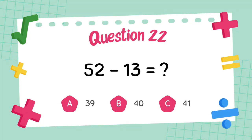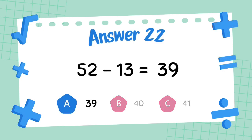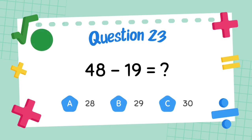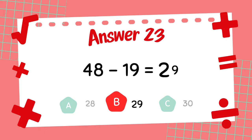What is 52 minus 13? The answer is 39. What is 48 minus 19? The answer is 29.